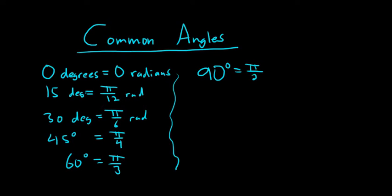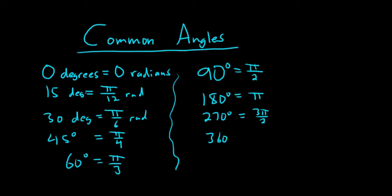You also have the special quadrantal angles. 90 degrees is pi over 2 — super important. 180 degrees is pi. 270 degrees is 3 pi over 2. And 360 degrees is 2 pi radians. Those are just some common angles that you should know when studying mathematics and trigonometry.